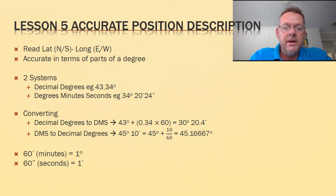The first system is decimal degrees. If I have a look at this, for example, 43.34 degrees, what I'm really saying is 34 out of 100 or 34 hundredths of a degree if I look at this section here.